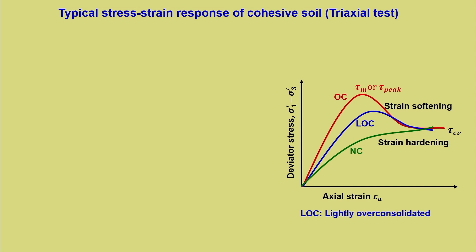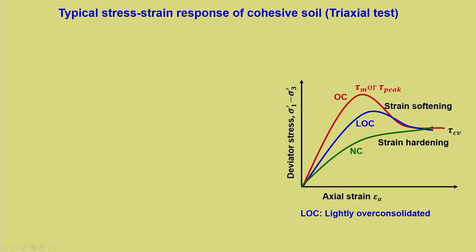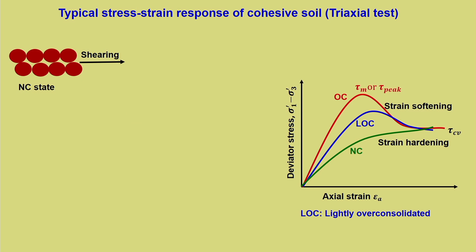Looking at the typical stress-strain response of a cohesive soil: more or less things remain the same; the axes have changed but the response remains similar. For an NC soil — the normally consolidated state — when it is sheared, we can see that it behaves like a loose state. Why? Because it has not been stressed too much in the past. When NC state of cohesive soil is sheared, particles move horizontally and downwards because it is in a loose state. They undergo compression during shearing, getting packed more due to readjustment in spaces. Significant plastic rearrangement of particles happens, resulting in a response similar to that of loose state.